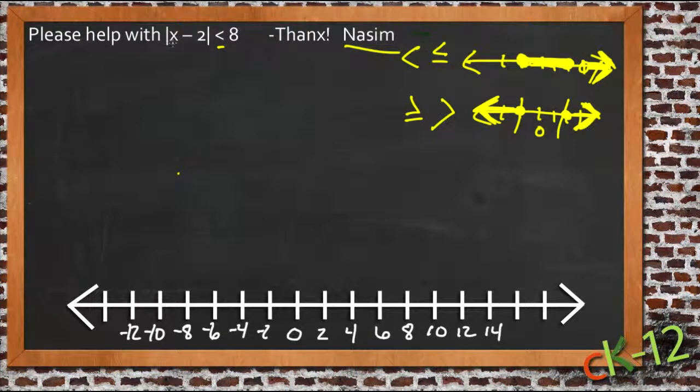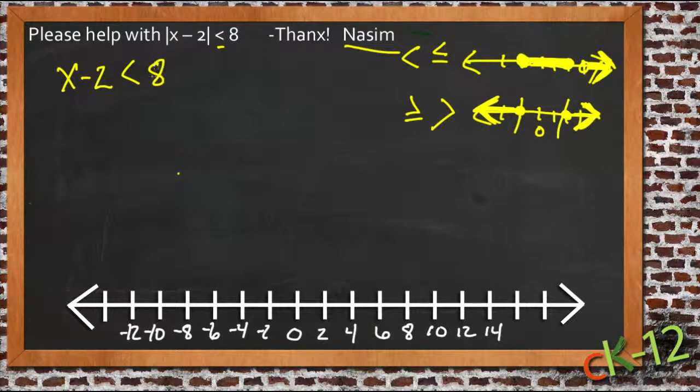All the numbers X can be will be between two different numbers. So let's see what those two numbers are. If we were to assume that X minus 2 was to stay positive, so the positive version of this, then we would just need the numbers that worked for X minus 2 is less than 8.